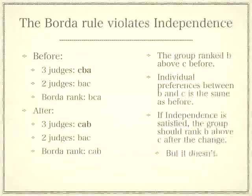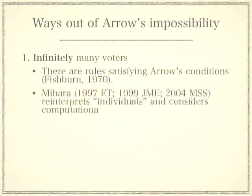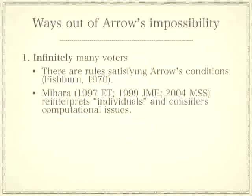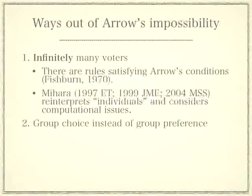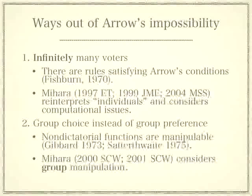How do we get away from Arrow's impossibility? First, if there are infinitely many individuals, there are aggregation rules satisfying Arrow's conditions — but infinitely many voters isn't realistic, and you can't actually carry out the computation from infinitely long data. So I gave a new interpretation of individuals and considered computability of aggregation rules, showing that rules satisfying Arrow's conditions violate computability. Second, you might ask why we need a group ranking when all we need is to choose a single alternative. That defines the notion of a social choice function. Gibbard-Satterthwaite theorem says that every non-dictatorial social choice rule can be manipulated by some voter — meaning a voter can misrepresent her preference to change the outcome in her favor. My related papers show that social choice functions immune to group manipulation only take account of the top alternatives in preferences, just like plurality voting.